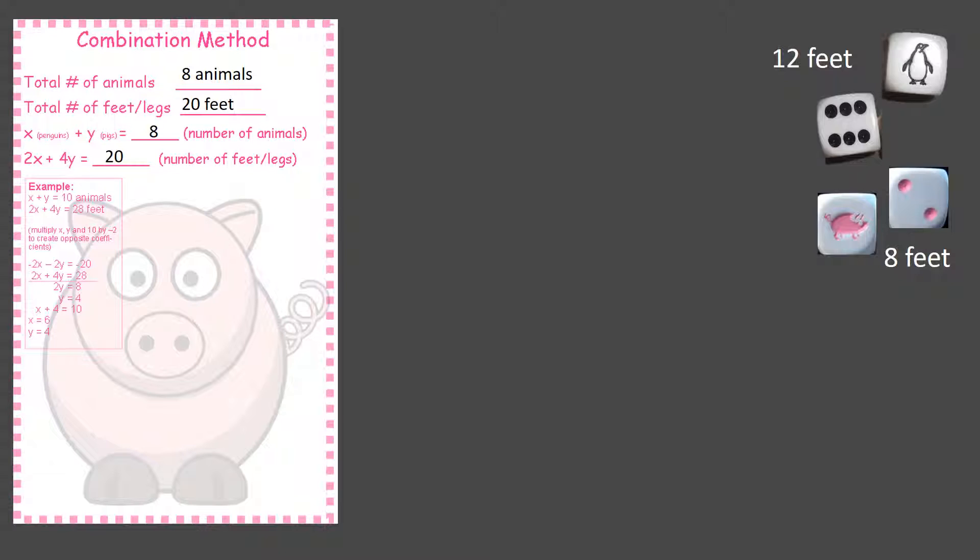So then that's all they know. They know the number of animals and they know the number of feet. Now they're going to try to solve with what was rolled on each dice. Remember, the dice is supposed to be kept confidential and nobody's to see it. So they're going to start by doing that math problem and putting in the input that they know.